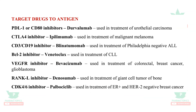Target drugs to antigens — used in immunotherapy related to cancer or the immune system: PDL/CD80 inhibitor durvalumab — urothelial carcinoma. CTLA-4 inhibitor ipilimumab — malignant melanoma. CD3 and CD19 inhibitor blinatumomab — Philadelphia-negative acute lymphocytic leukemia. BCL-2 inhibitor venetoclax — chronic lymphoid leukemia. VEGFR (vascular endothelial growth factor) inhibitor bevacizumab — colorectal cancer, breast cancer, and glioblastoma. RANKL inhibitor denosumab — giant cell tumor of the bone. CDK4/6 inhibitor palbociclib — estrogen receptor-positive, HER2-negative breast cancer.